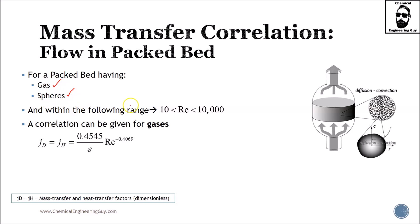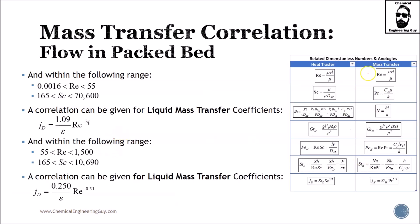Within the following range, which is pretty acceptable, a correlation can be given for JD. Essentially, JD is approximately equal to JH — relating mass transfer and heat transfer. This void space factor and the Reynolds number are key, where Reynolds is defined as density times velocity times the characteristic length divided by the viscosity. You need to ensure you have the correct ranges.